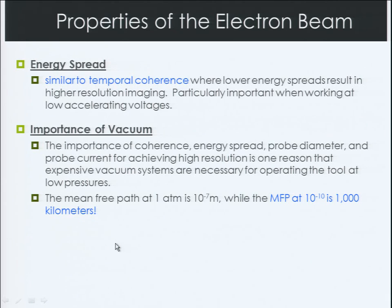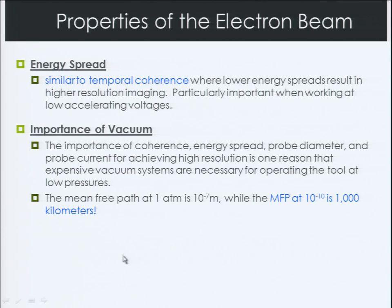One thing to note is that the mean free path at one atmosphere is 10 to the negative 7 meters, while the mean free path at 10 to the negative 10 torr is a thousand kilometers. The mean free path is how far one gas molecule would have to travel before hitting another gas molecule.